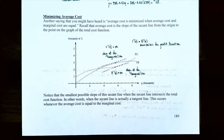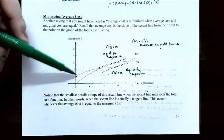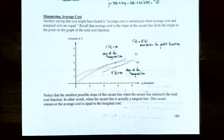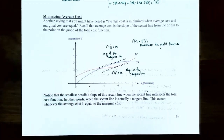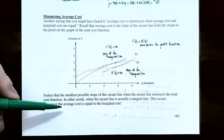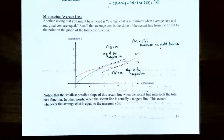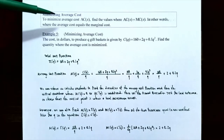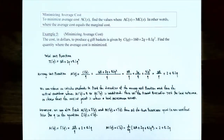Minimizing average cost. Another concept you may have heard is that average cost is minimized when the average cost and the marginal cost are equal. Recall that average cost is the slope of the secant line from the origin to a point on the graph of the total cost function. The smallest possible slope of this secant line occurs when it is actually tangent to the total cost curve — and this occurs whenever the average cost equals the marginal cost.